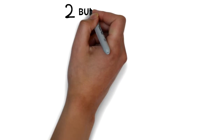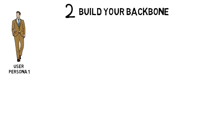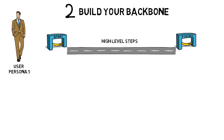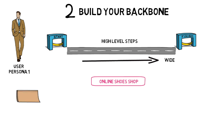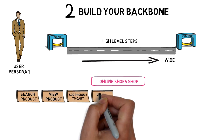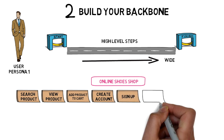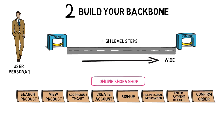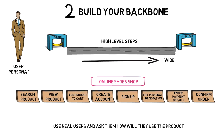Now it's time to build your backbone. Take one of your user personas and think about the whole user journey. Describe at a high level the tasks or steps the user will perform from start to finish. At this level, you need to go wide, not deep — don't get too detailed. For example, if we are building a product that helps people buy shoes online, the steps the customer will take are: search a product, view product, add product to cart, create account, sign up, fill personal information, enter payment information, and confirm order. You may want to ask real users to tell you the story of the activities and tasks they will perform, using sticky notes or digital tools to capture these details.